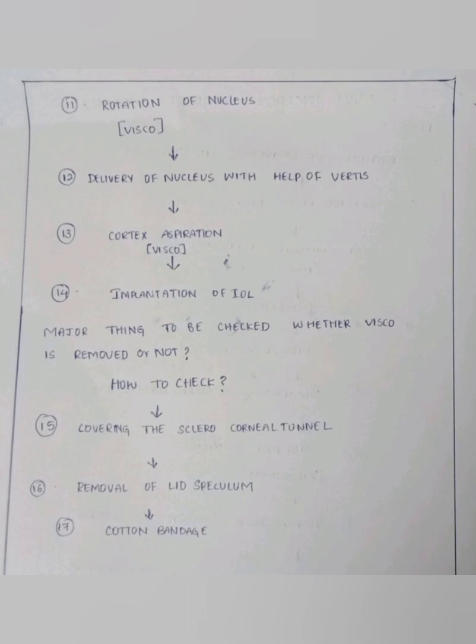The next step is to again inject viscoelastic through the side port to form the anterior chamber. The most important step — the fourteenth — is implantation of a rigid IOL. This IOL is made up of polymethyl methacrylate (PMMA).